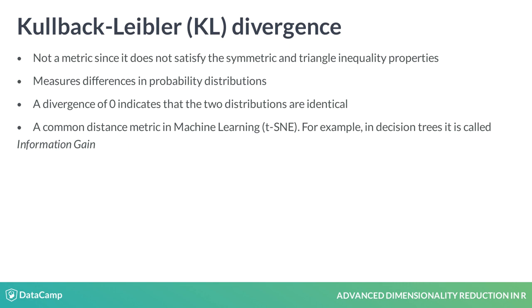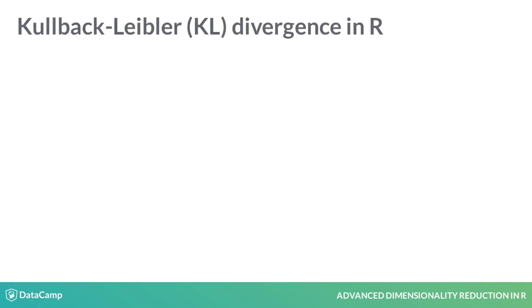It is a common distance metric used to optimize algorithms in machine learning, like in the case of t-SNE. In decision trees, for example, it is called information gain. To compute the KL divergence in R, we are going to use the philentropy package.